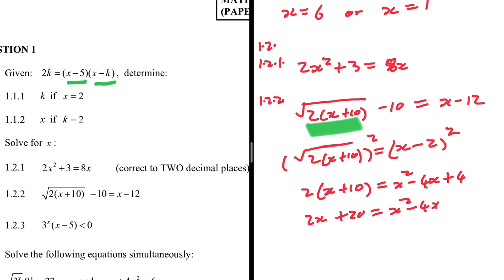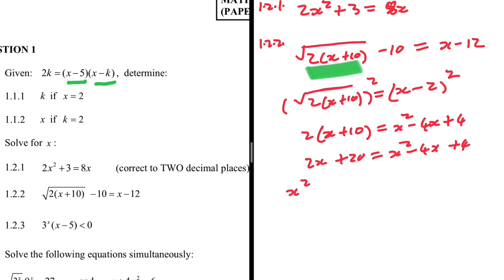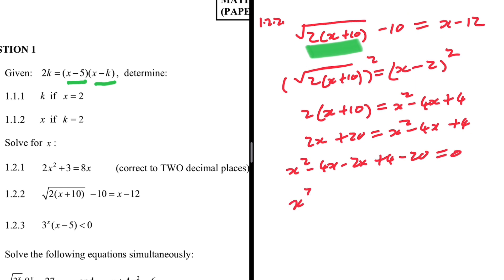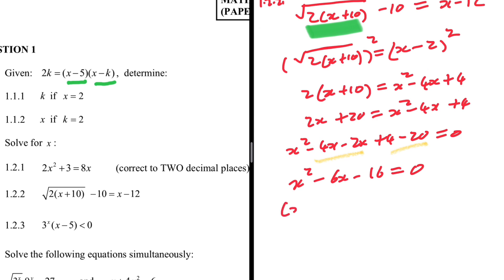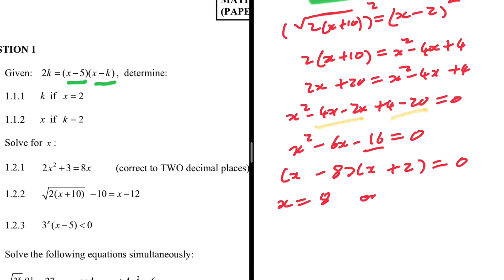So 2x + 20 = x² - 4x + 4, which gives x² - 4x - 2x + 4 - 20 = 0, meaning x² - 6x - 16 = 0. Factorizing: we need factors of -16 that add to -6, which are -8 and +2. So x = 8 or x = -2.